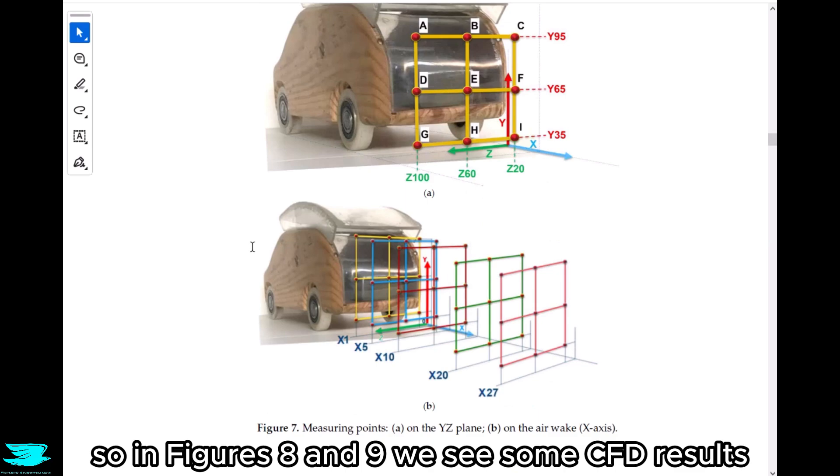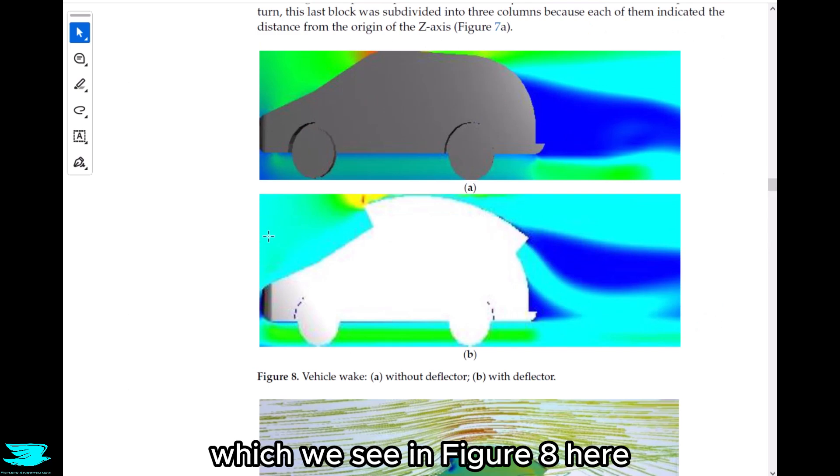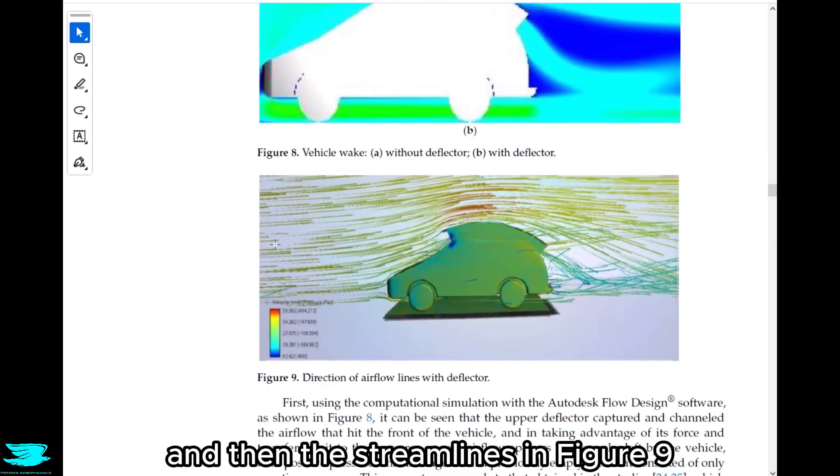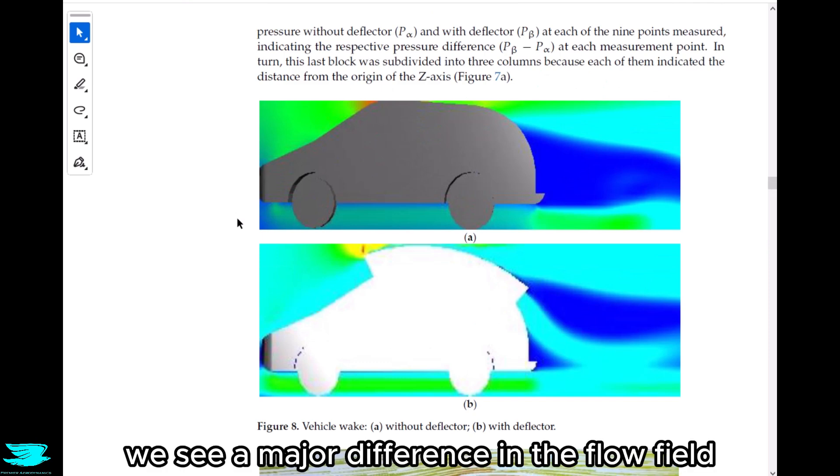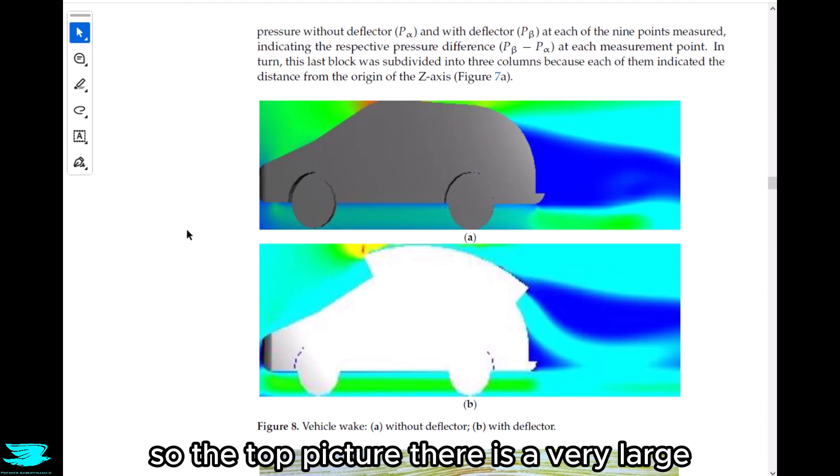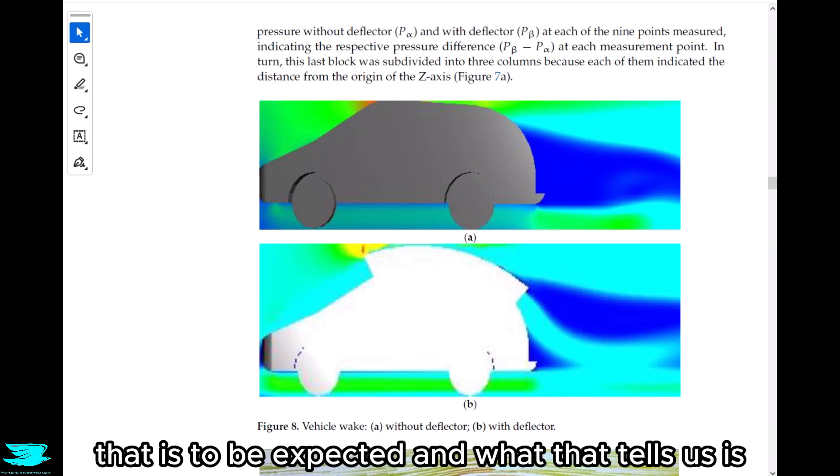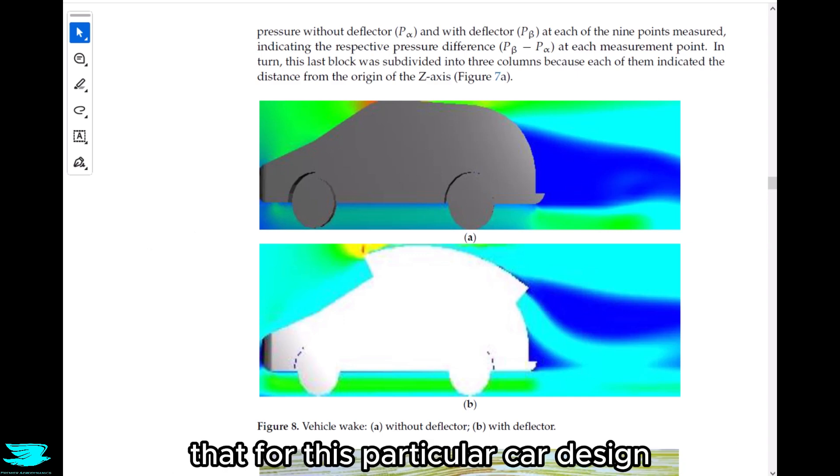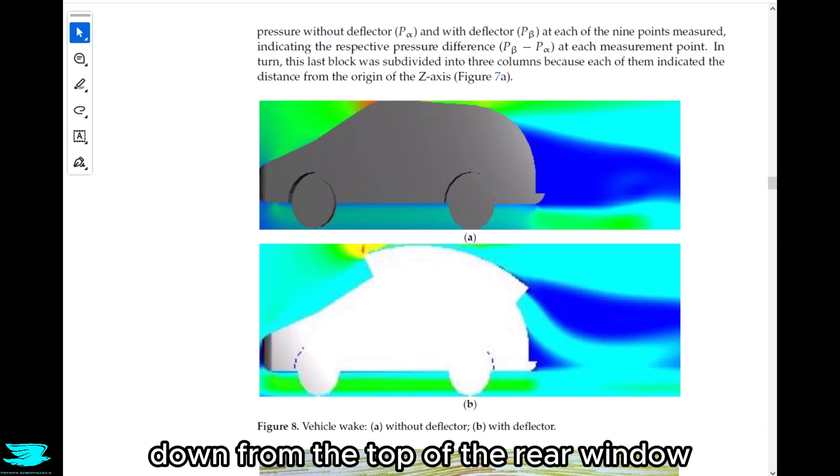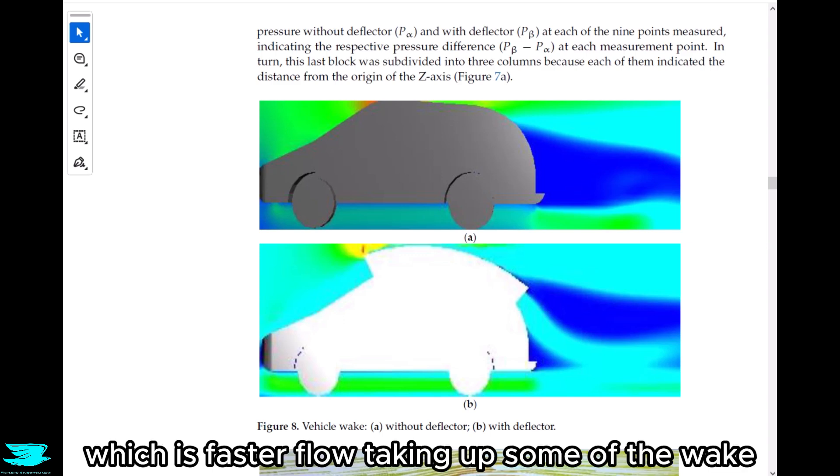In figures 8 and 9 we see some CFD results, namely the flow speed around the vehicle in figure 8 and then the streamlines in figure 9. First in figure 8, we see a major difference in the flow field around the car. Without the ducting in the top picture, there is a very large, pretty dark blue region in the wake. That is to be expected. For this particular car design, which is not too far off a hatchback, the flow separates a little down from the top of the rear window and the wake is very large. For the bottom picture, we now see this light blue region channeling down into the wake, which is faster flow taking up some of the wake.